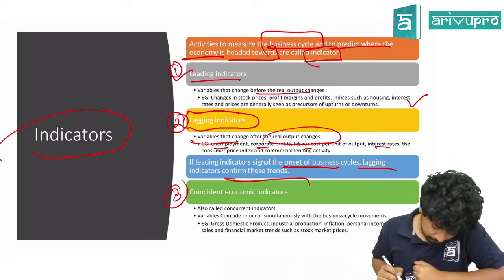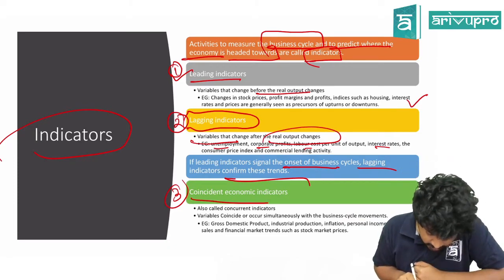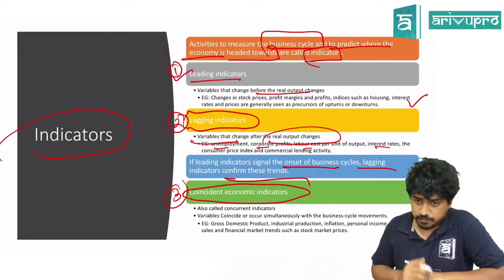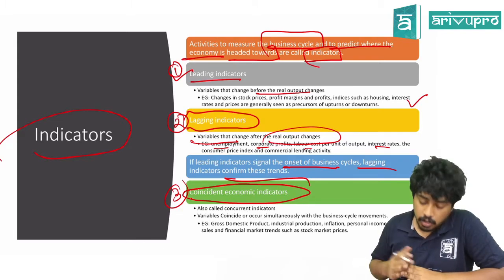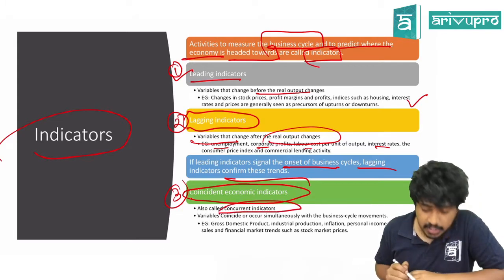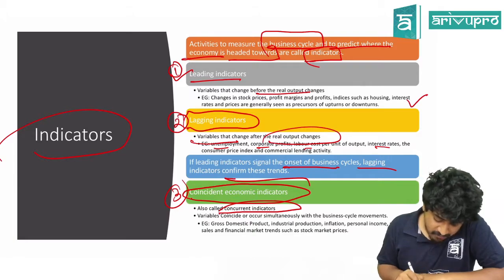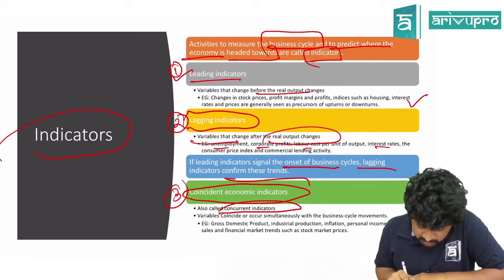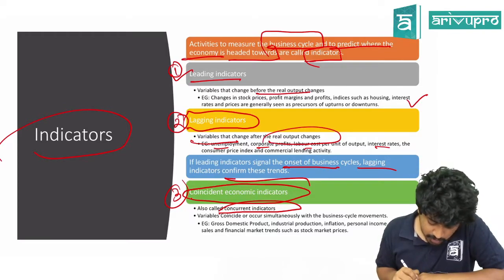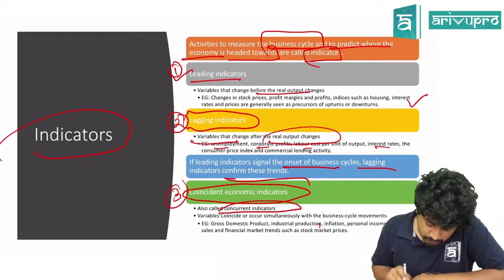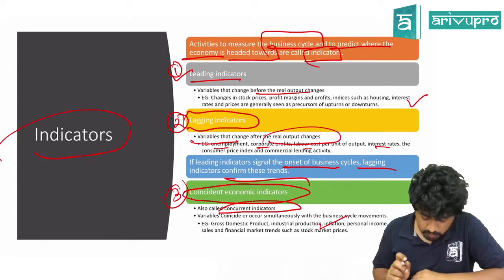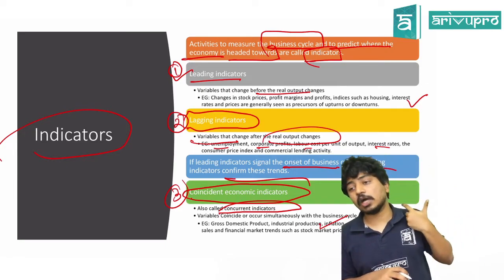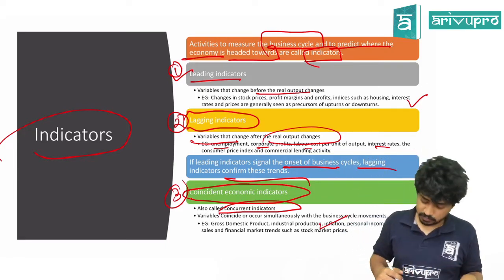Coincident indicators are variables that coincide or occur simultaneously with business cycle movements. Another name is concurrent indicators. Examples: GDP, industrial production, inflation, personal income, retail sales, financial market, and stock market prices — all are coincident indicators.